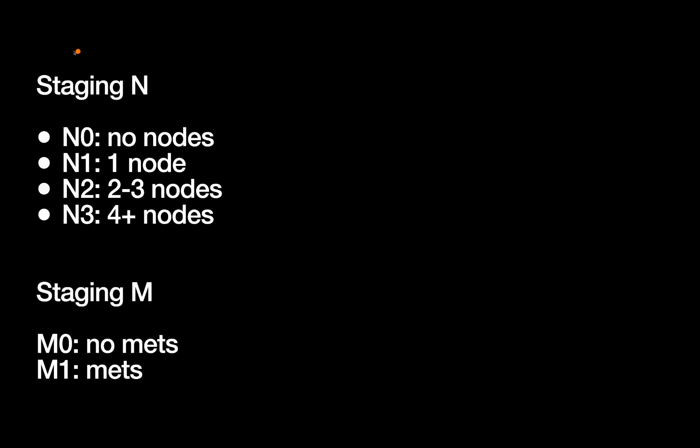All right, N staging. This is less important for surgery so we're going to spend less time on it. N0 no nodes, N1 one, N2 two to three, and N3 greater than four or greater. And then of course M, as always M0 no metastatic disease or M1 metastatic disease.